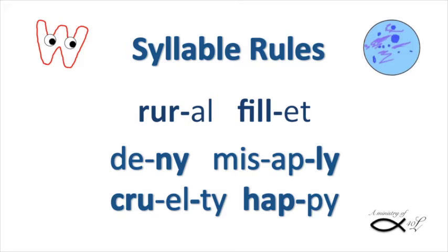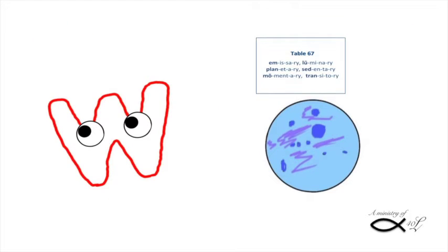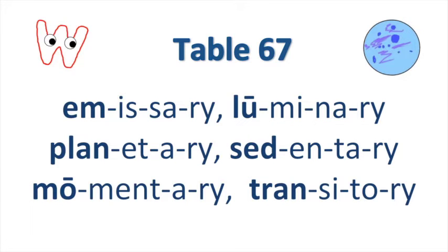That's enough rules — I want to see some serious words. Lay them on me. Now you'll get to see the schwa in action. The bolded syllables are accented; the unaccented syllables often schwa. And Y at the end says E in unaccented syllables: emissary, luminary, planetary, sedentary, momentary, transitory.